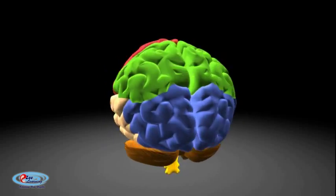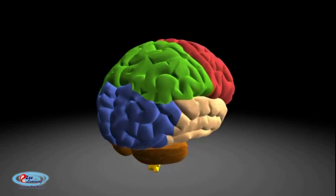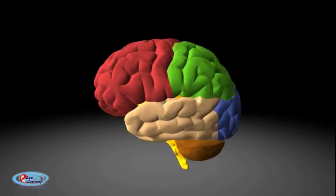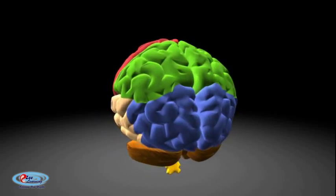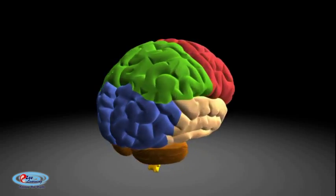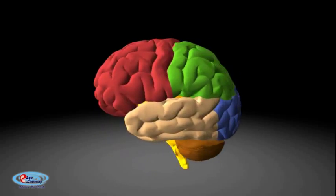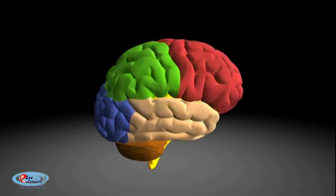The human brain has the same general structure as the brains of other mammals, but is larger than any other in relation to body size. The adult human brain weighs on average about 1.5 kilograms, with a volume of around 1,130 cubic centimeters in women and 1,260 cubic centimeters in men.